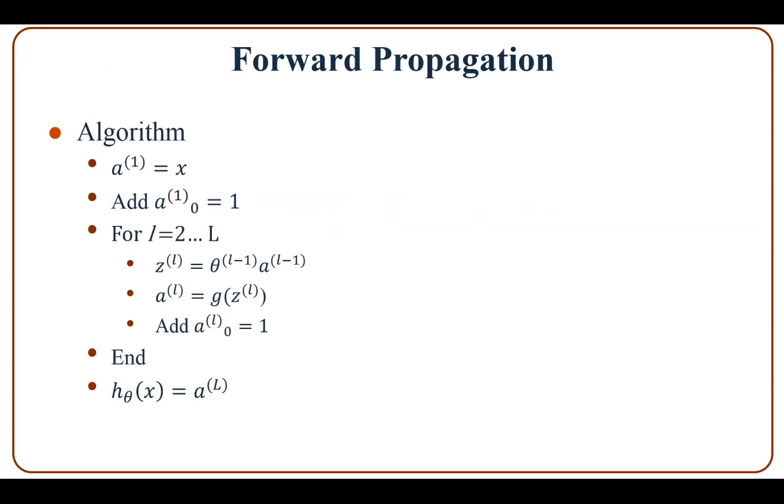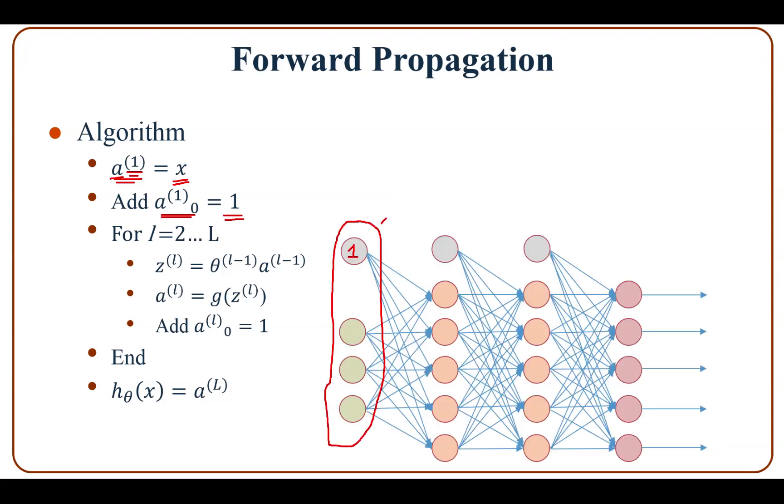Now we look at the algorithm for forward propagation. This is more general than the example we saw before. Given the instance x, first we assign a1 to x. The output at layer 1 is actually just x. Then we add a1_0 which is equal to 1. That's what we do in the first layer.